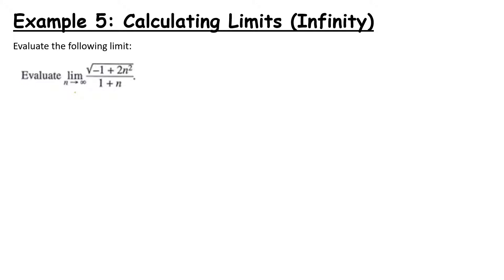Now let's look at a more complex example: evaluate the limit as n goes to infinity of the square root of (minus 1 plus 2n squared), all over 1 plus n. The square root at the top causes a little problem. Students often ask: can I just square the top and square the bottom? The answer is no — multiplying both by 2 keeps the value the same, but squaring top and bottom does not.